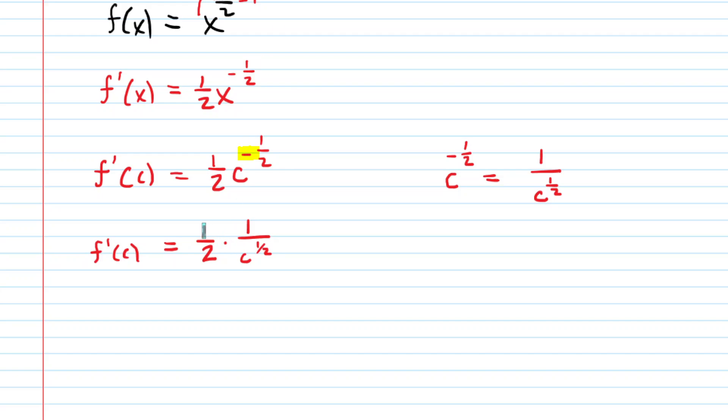Now we're going to multiply these two fractions, and when we do that we multiply the numerators and also multiply the denominators. So the final form of our f'(c) will be in the numerator 1 times 1, and in the denominator 2 times c to the 1/2.